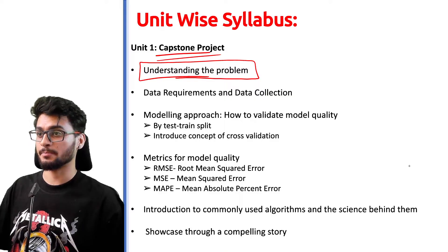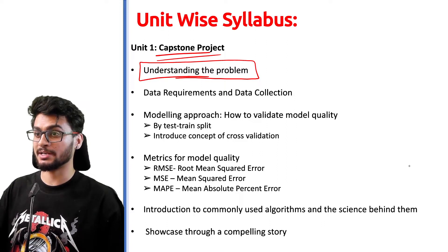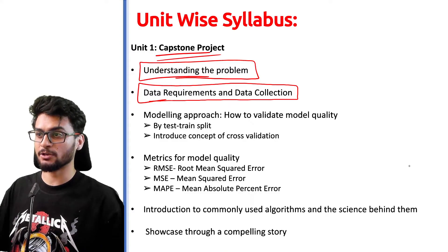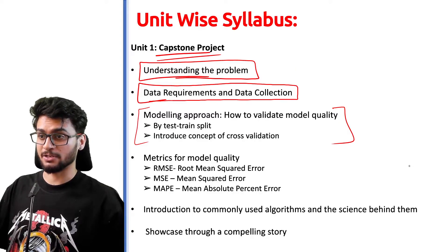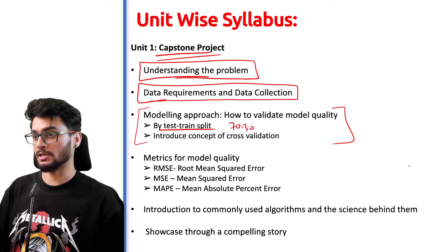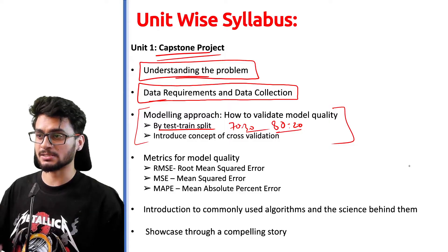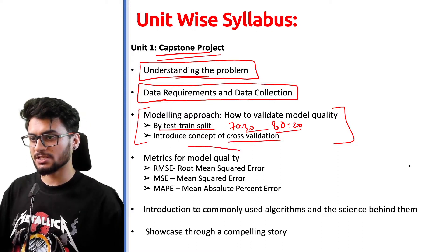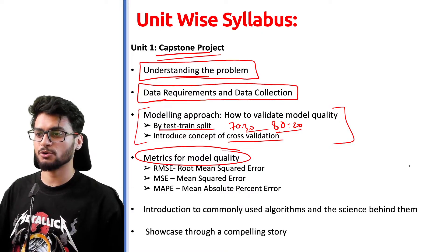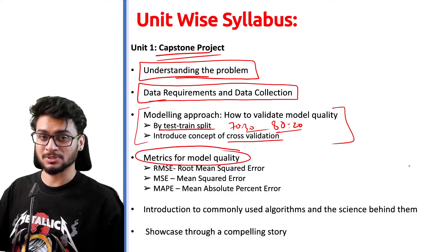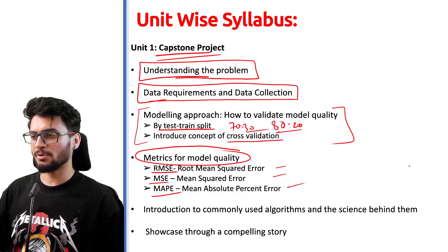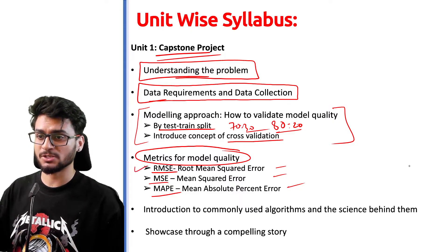As you may have studied in the project cycle in class 10th, first you need to define the problem, then collect data. The data has to be good — if the data is not good enough, your project will not be good enough. So make sure whatever data you collect is authentic and real. Next is the modeling approach: when you create a train-test split, it can be 70-30 or 80-20 — it is trial and error. You will practice cross-validation and learn how to validate model quality. To judge a model, for class 12th you look at performance metrics such as Root Mean Squared Error (RMSE), MSE, and MAP, which are applicable for various strategies.